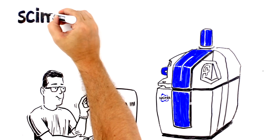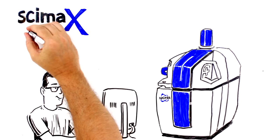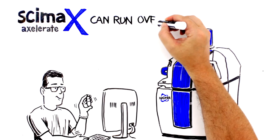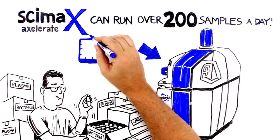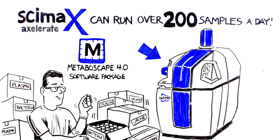Instantly switch back to electrospray and blast through metabolomics samples with the Symax Accelerate workflow that can run over 200 samples a day using Bruker's innovative Metaboscape 4.0 software package.